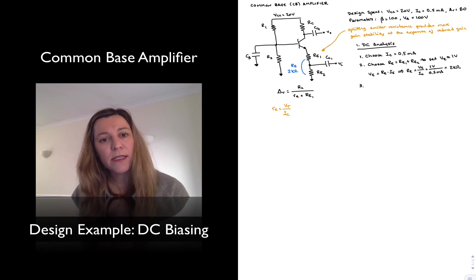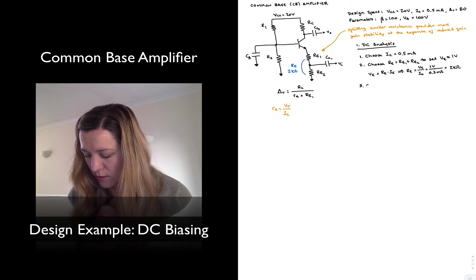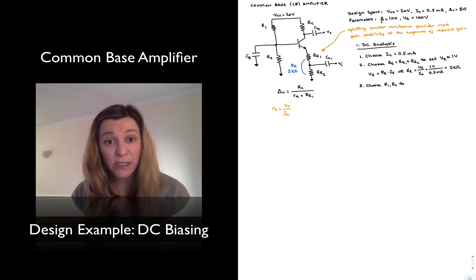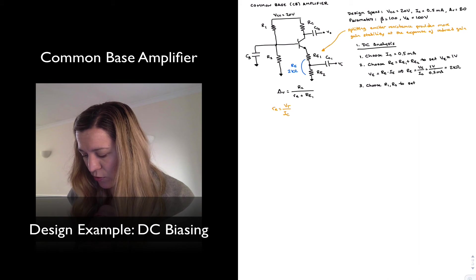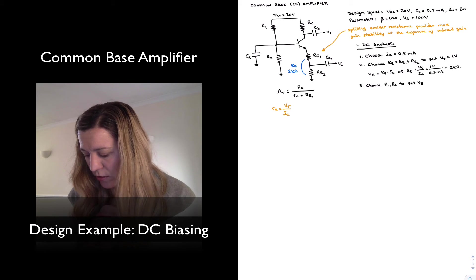Step number three is I'm going to select my voltage divider network, so select values of R1 and R2, basically to turn on my transistor. So to set the base voltage to VE plus 0.7 volts, or 1.7 volts in this case.